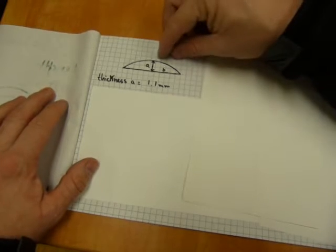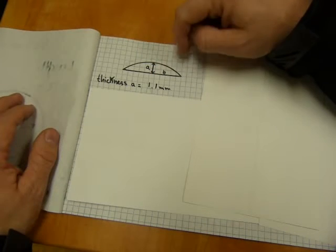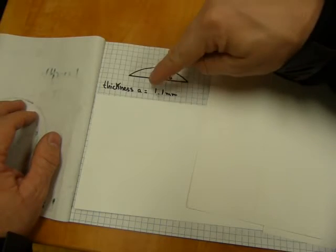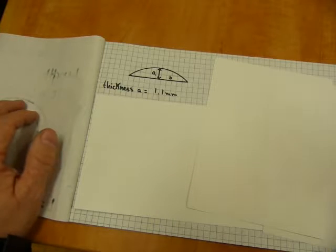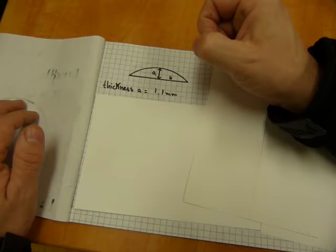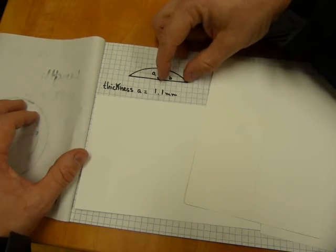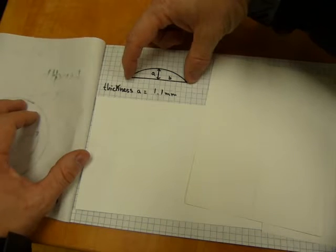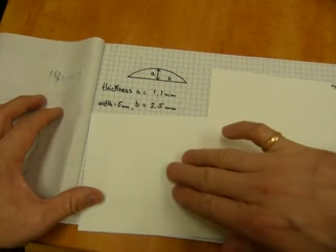So in this picture the thickness of the ring is marked with this letter a which is the altitude of this shape here. This shape is a segment, a circle segment. So that's going to be the altitude of the circle segment and b is from the halfway point to the corner there. Because the width of the ring is 5mm so that's going to be 2.5mm. So that's what I wrote there.